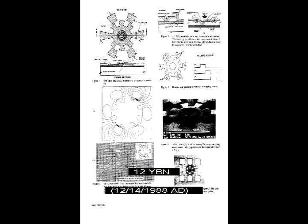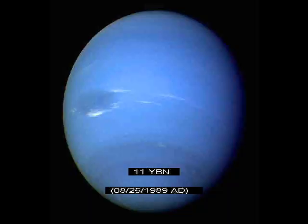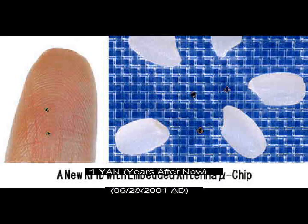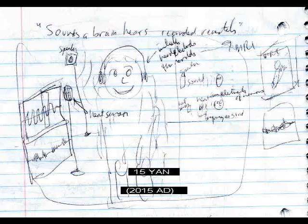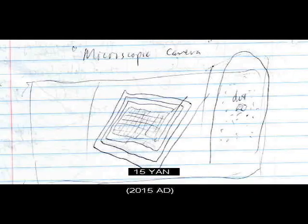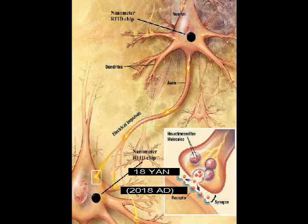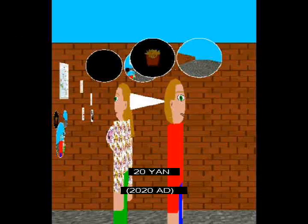Microscopic motor. Ship reaches Neptune. Individual atoms moved. Microscopic radio chip. Remote neuron reading. Image of what the eyes are seeing captured remotely. Sound a brain hears recorded remotely. Microscopic camera. Radio device functions as cell organelle.